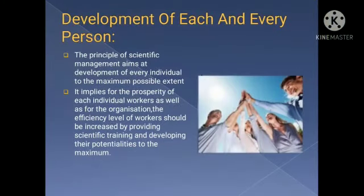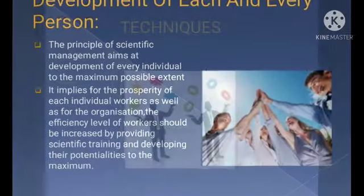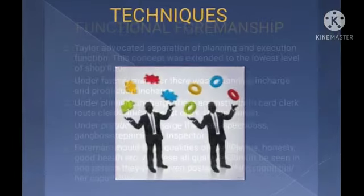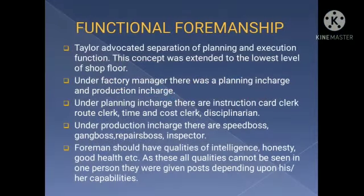The next principle is Development of each and every person. This principle of scientific management aims at the development of every individual to the maximum possible extent. It implies prosperity for each individual — workers as well as for the organization. The efficient level of workers should be increased by providing scientific training and developing their potential to the maximum.